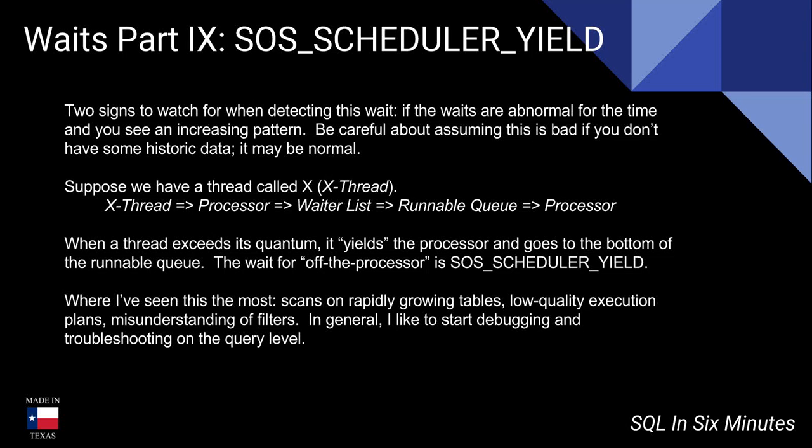Here's a hypothetical example: a thread — call it X thread — goes to the processor, then to the waiter list, then to the runnable queue, and then back to the processor. Basically, when a thread exceeds its quantum, it yields the processor and goes to the bottom of the runnable queue, and the wait off the processor is the SOS scheduler yield.